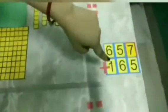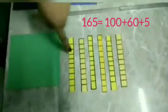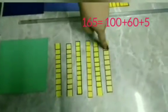Now let's split 165 into hundreds, tens and ones. 165 has 100, 6 tens. And how many ones? 5 ones.